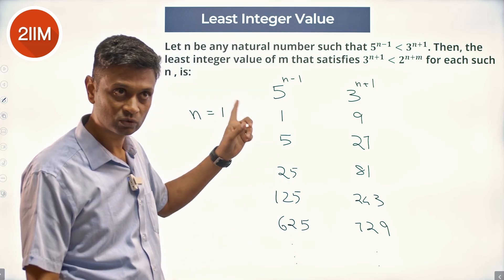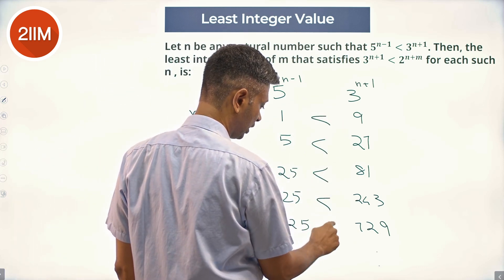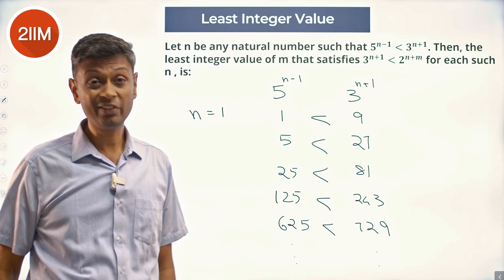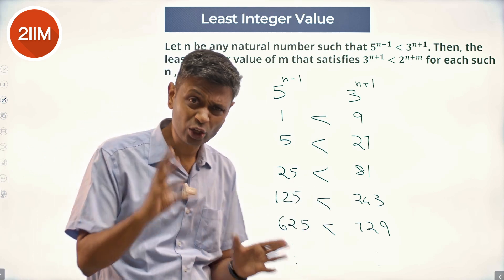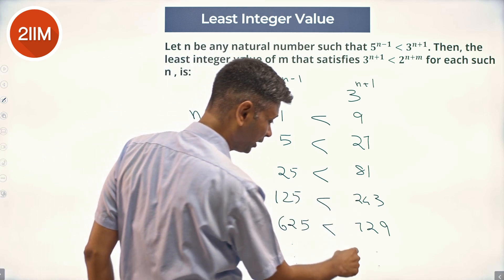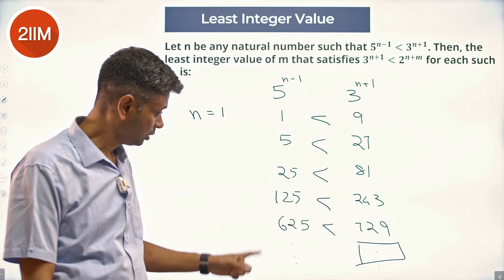I put n=1, didn't work—this is lesser, lesser, lesser, lesser. But the moment we come here, you can even sense it's going to work. 625, 729 is very close. I multiply this by 3, I don't even have to find the number—it's some 2187, I don't care. This is greater than this.